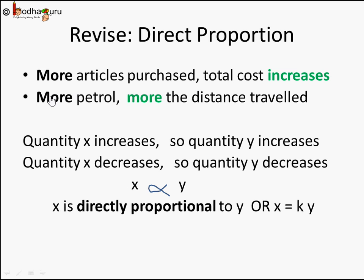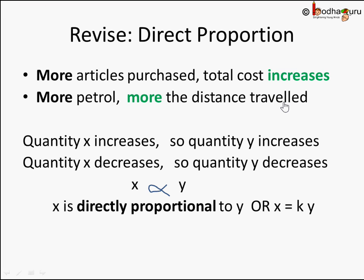The quantity X is the amount of petrol, and quantity Y is the distance travelled. If you want to travel more distance, you need more petrol. More petrol means more distance travelled. Similarly, more the petrol, more the cost you need to pay at the petrol pump. Lesser petrol you want, lesser the cost you need to pay. So quantity X is directly proportional to Y — when quantity X increases, Y also increases, and when X decreases, Y also decreases.